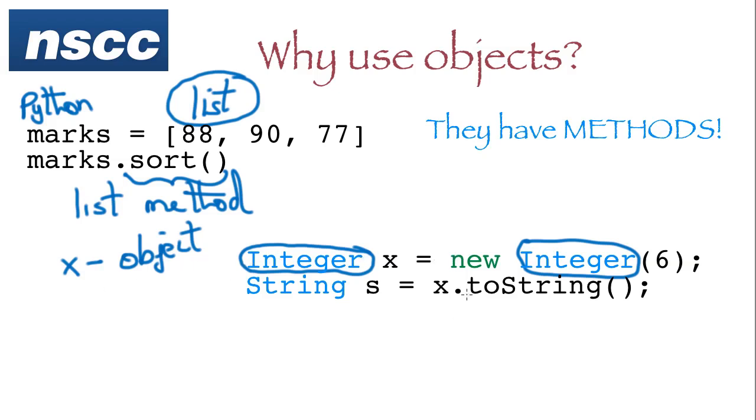And one of the methods is toString, which means I could take the number 6, and I can convert that easily to a string character, which represents a 6. And we can only do that because we're using objects.